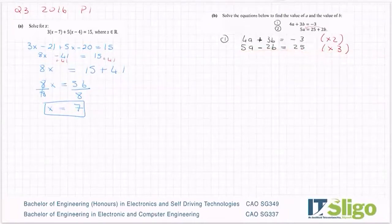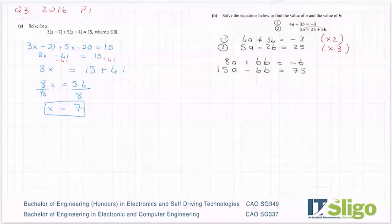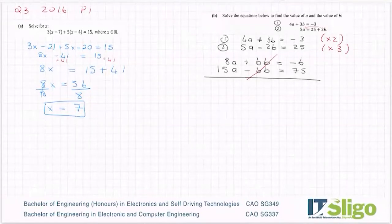Let's multiply equation 1 by 2: 2 by 4a is 8a, 2 by 3b is 6b equals minus 3 by 2 is minus 6. Let's multiply equation 2 by 3: 3 times 5 is 15a, minus 6b equals 25 by 3 is 75. Plus 6 minus 6 cancels to zero, 8 and 15 is 23, equals 75 minus 6 is 69. Divide by the number in front of the letter, so a is equal to 3.